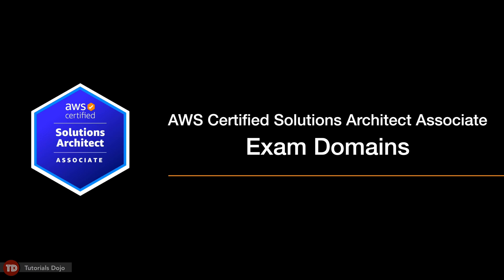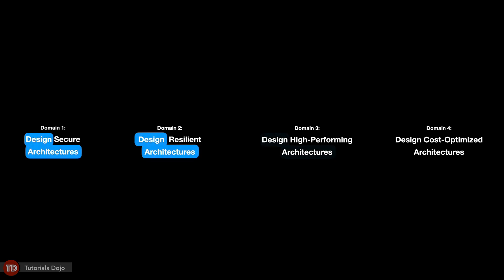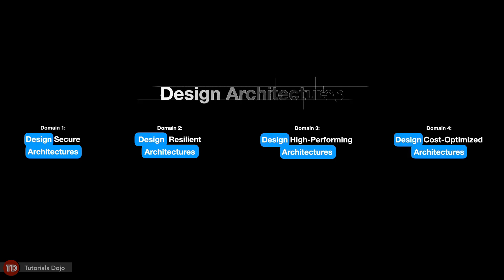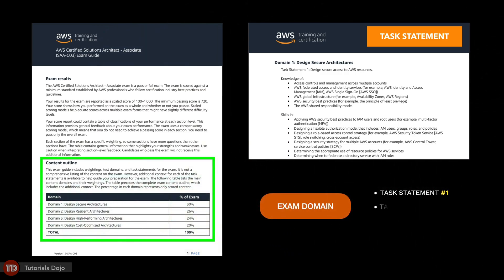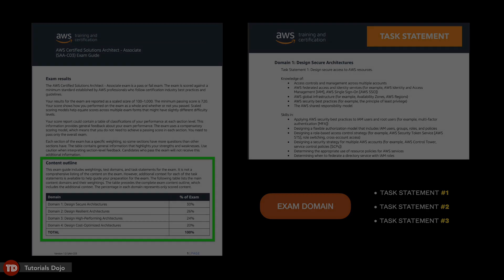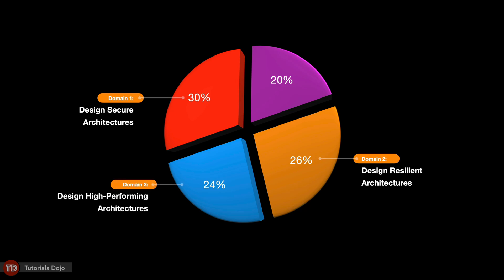The AWS Certified Solutions Architect Associate exam has four different domains, each with corresponding weight and topic coverage. The exam domains are as follows: Domain 1 is Design Secure Architectures, Domain 2 is Design Resilient Architectures, Domain 3 is Design High-Performing Architectures, and Domain 4 is Design Cost-Optimized Architectures. These four domains are focused on designing architectures centered on security, resiliency, high performance, and cost optimization. The first domain covers 30% of the exam, the second covers 26%, the third 24%, and the last one covers 20%.